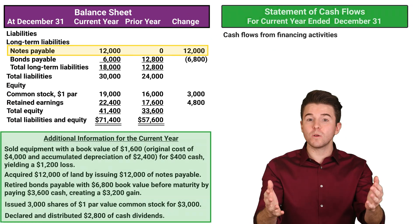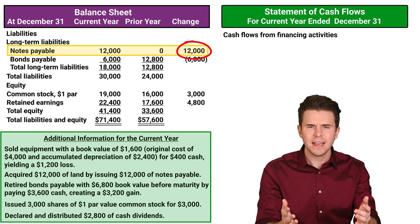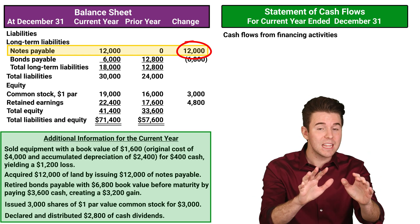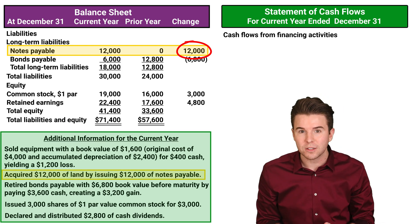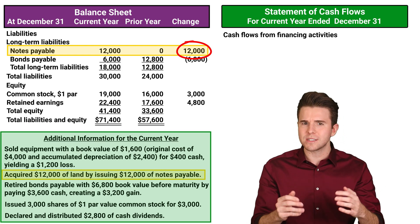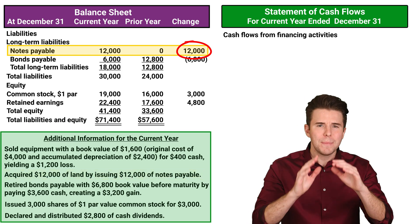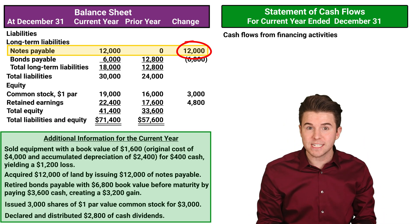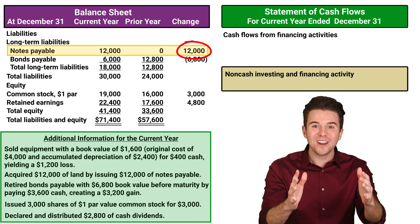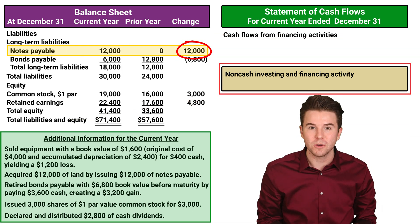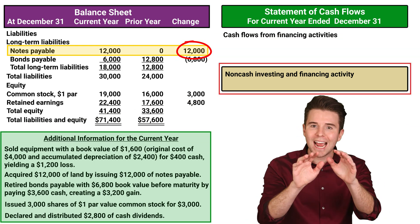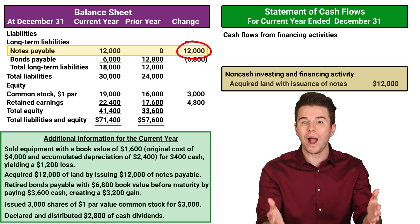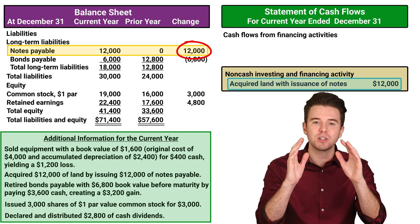First, we see that notes payable increased by $12,000. Looking at our additional information, we see that the company acquired $12,000 of land by issuing $12,000 of notes payable. Because no cash was ever exchanged, but this still is a significant investing and financing activity, we report it as a separate schedule to the statement of cash flows under non-cash investing and financing activity — that the company acquired land with issuance of notes for $12,000.